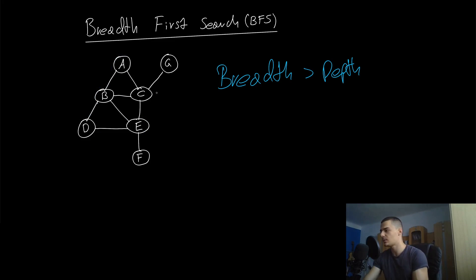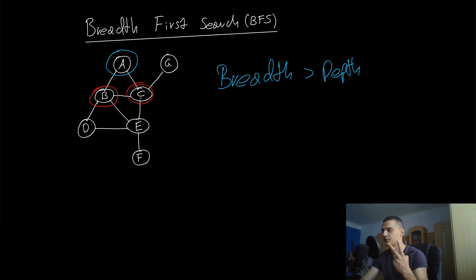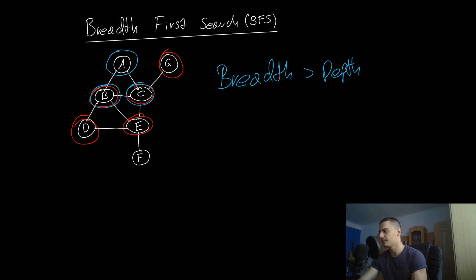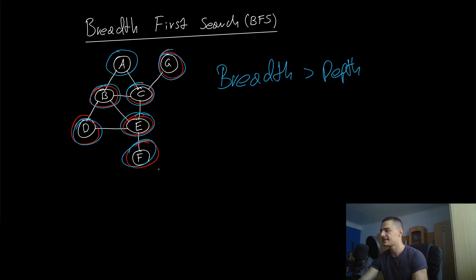In BFS we first look at all neighbors at layer one, then layer two, and so on. Starting at A, we look at neighbors B and C and mark them. We process B — found B — then mark B's neighbors D and E. But we still have C as a neighbor of A, so we prefer C first. We discover C, mark its neighbor G, then go back to B's neighbors D and E, discover D, then E, and mark F as E's neighbor. Then instead of going straight to F we go to G, discover G, then F.